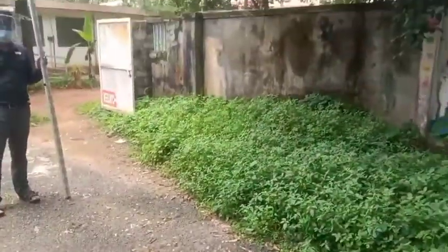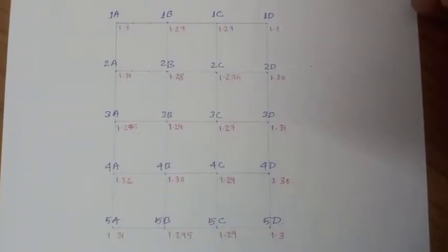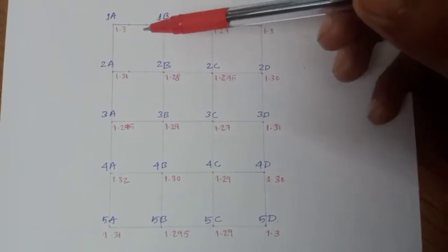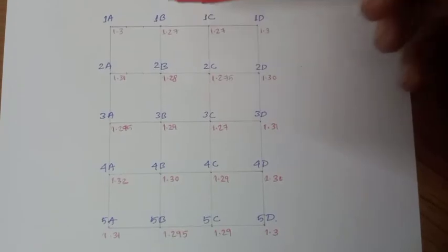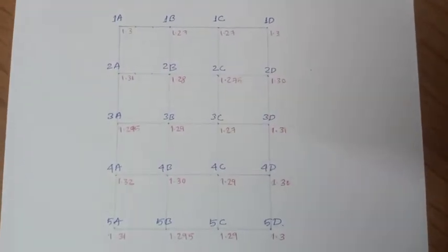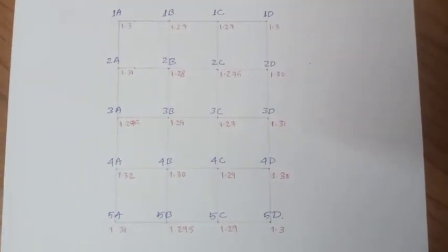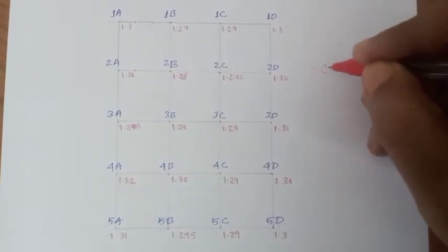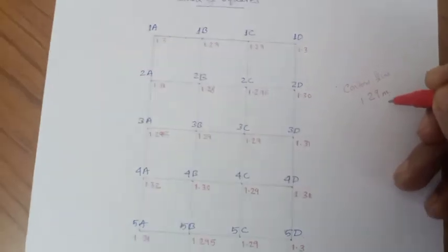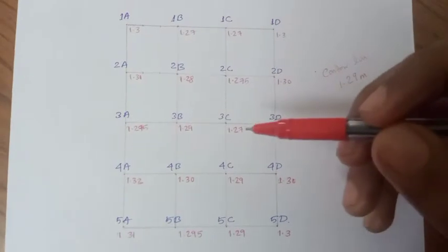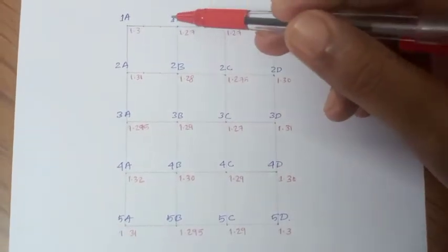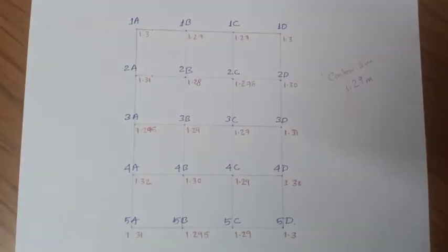We have marked all the points from 1A to 5D. There is a variation of values but the range is about 1.272 to 1.32 as the maximum value. Right now I am considering drawing a contour line of 1.29 meters of height. For that I will start from line 1A to 1B — in this line there may be a point having a value of 1.29.